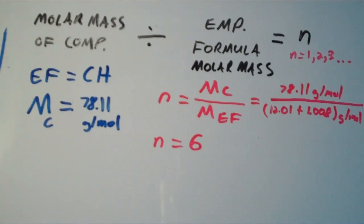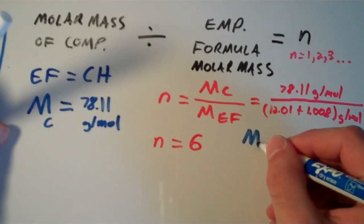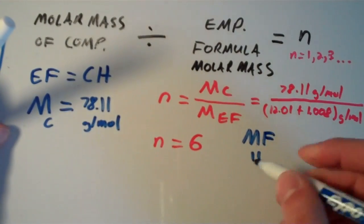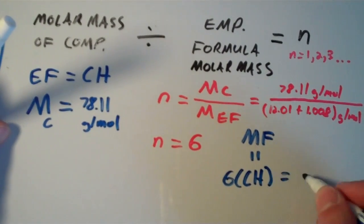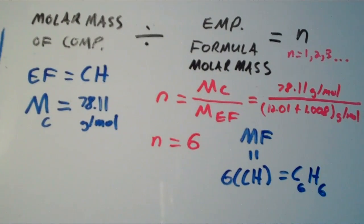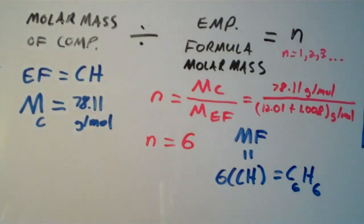So the empirical formula is CH, and the molecular formula — MF — is equal to n times CH, which is 6 times CH, or simply C6H6. We just successfully calculated the molecular formula of our compound using its molar mass and its empirical formula, which could have been determined by experiment or given in a problem. Let's do one more.